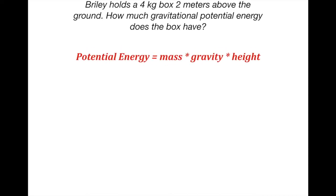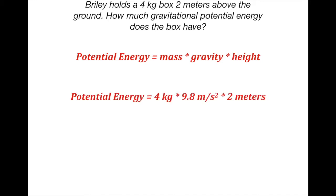Briley is holding a four-kilogram box two meters above the ground. How much gravitational potential energy does the box have? The first thing we're going to do is write out our formula: potential energy equals mass times gravity times height. Then we substitute the values — mass is four kilograms, height is two meters, and gravity is 9.8 meters per second squared. Follow order of operations, multiply all three of them, and you get the answer of 78.4 joules.